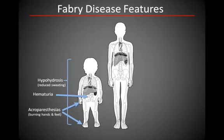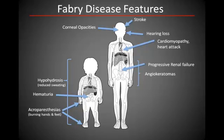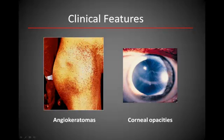In adults, there is typically multi-system evidence of ceramide storage, resulting in major medical complications if undetected. Cutaneous angiokeratomas are a visible manifestation of ceramide storage. Angiokeratomas are often present in the abdomen, buttocks, and inguinal regions, and result from abnormal proliferation of blood vessels. Storage of ceramide can also affect the eyes, resulting in corneal opacities.